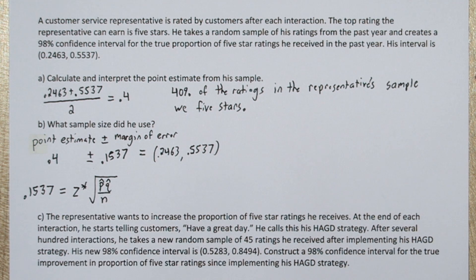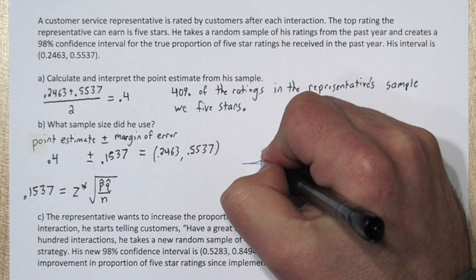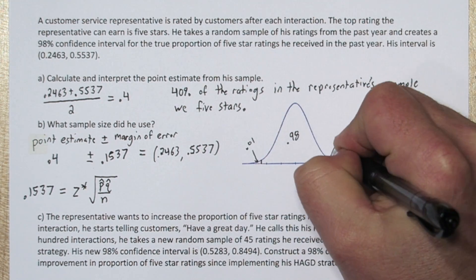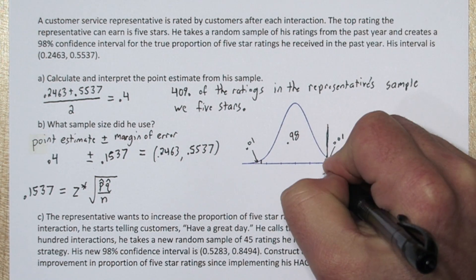Let's calculate what z star is. Z star is the number of standard deviations you need to go from the middle of the normal distribution to isolate the middle 98%. So if I stamp a normal distribution, and I label the middle 98%, in each of these tails we have 1%.